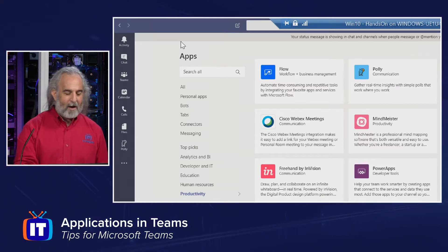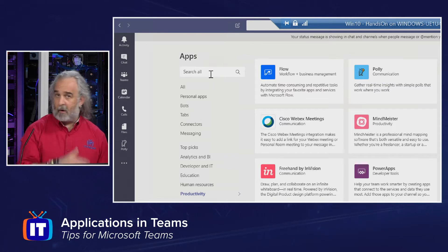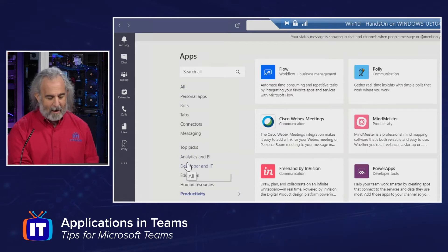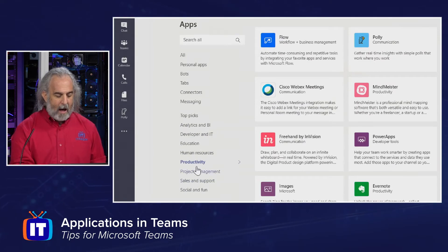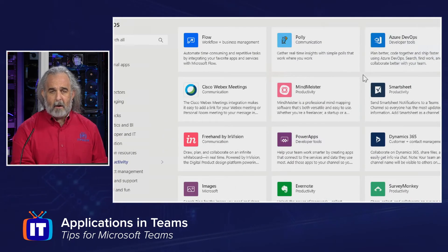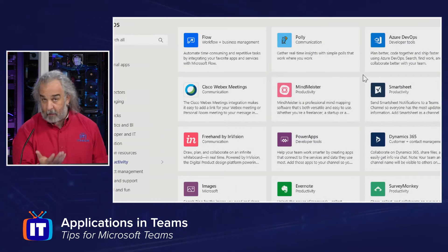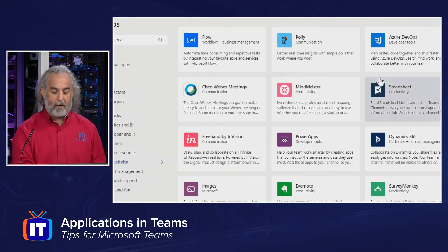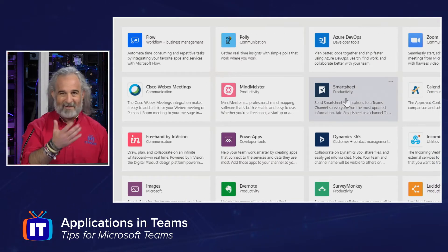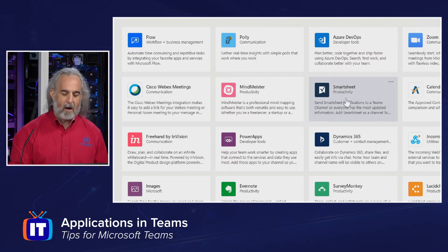We do have a categorical search area. We can search by any and all categories, and apps are listed in various subcategories. I'm in the productivity category right now, and these are all apps that are theoretically going to help me be more productive. I'm going to use Smartsheet as our example app and click on the tile.